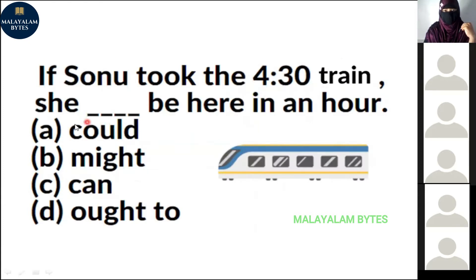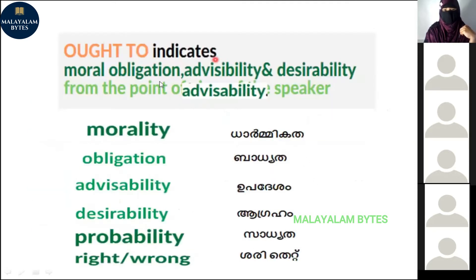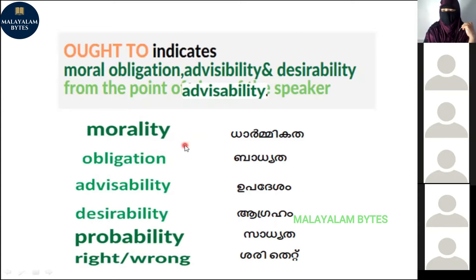Next question: 'If she noted the 4:30 train, she'd be here by now.' Options: could, might, can, ought to. 'Ought to' is the answer. 'Ought to' can express deduction, and also covers obligation, advice, ability, desirability, and probability. You need to check which meaning is most apt — 'ought to' or 'should' can sometimes go together, but check which is most appropriate.